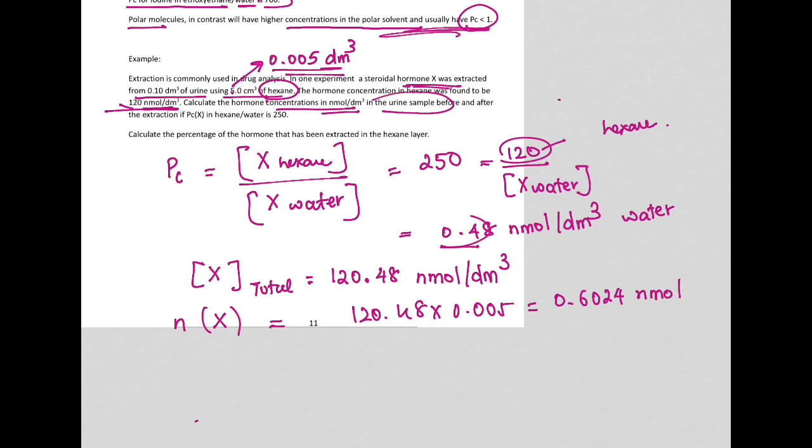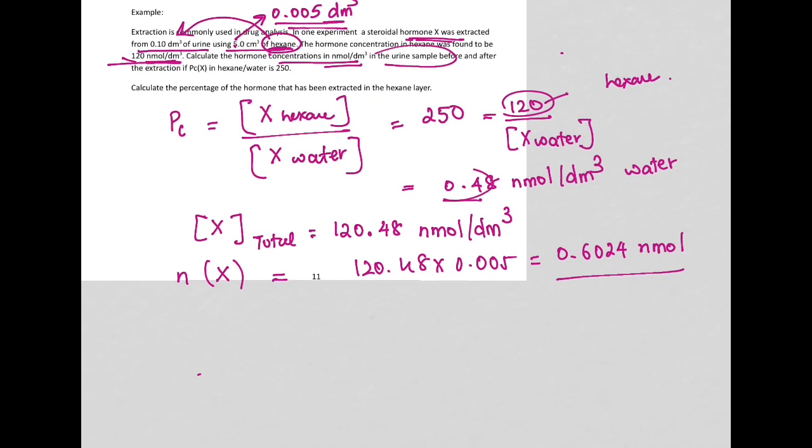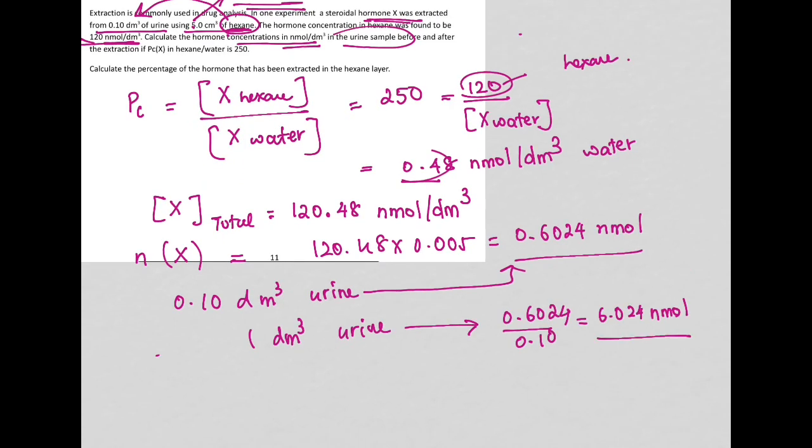This is the number of moles of X in the hexane. But this came from the urine. So 0.1 dm³ of urine contain this number of moles of X. Therefore, 1 dm³ of urine. So this is the amount of X in urine before the extraction.